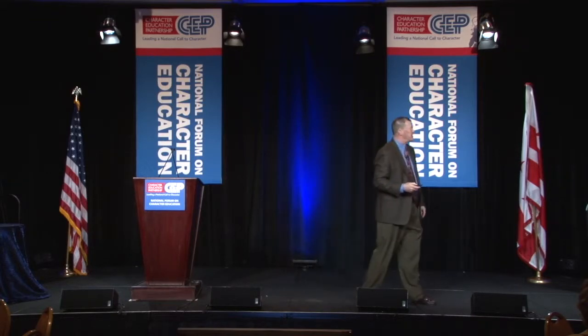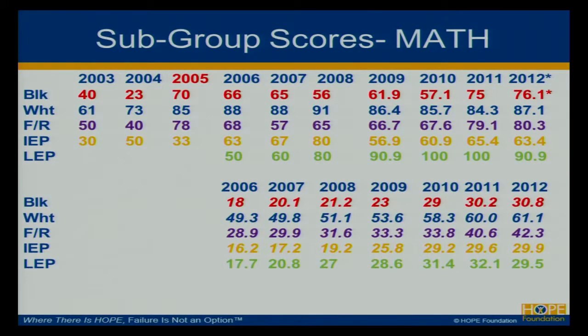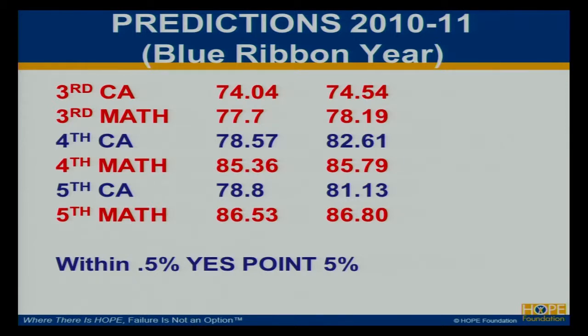Our African-American score in one year went from 23% proficient to 70%. Our ELL students — look at the growth: 50, 60, 80, and then the last four years either 90 or 100%. Principle 11 is about talking about your data. Our data is strong because of character. We even make predictions — before we take the MAP test, I look at all of our data and determine what our scores are going to be. On the left is the prediction, on the right is the score. It's amazing: predicting 74 and having 74, predicting 85 and having 85. Data can be a powerful tool when you mix it in with loving boys and girls.